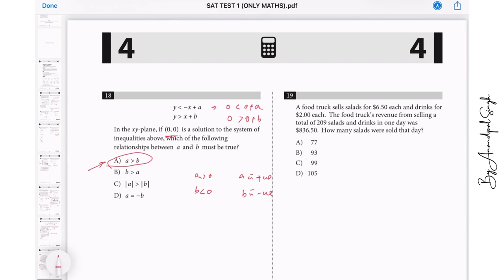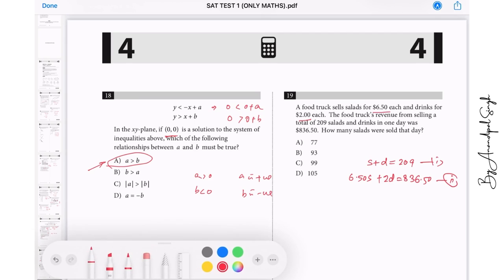Let us do a few more questions. Question number 19. A food truck sells salads for $6.50 each and drinks for $2 each. The food truck's revenue from selling a total of 209 salads and drinks, salads and drinks gives you 209, and the cost of each salad is 6.50 and drink is 2, and it accounts to total of $836.50. How many salads were sold? We need to find how many salads were sold.